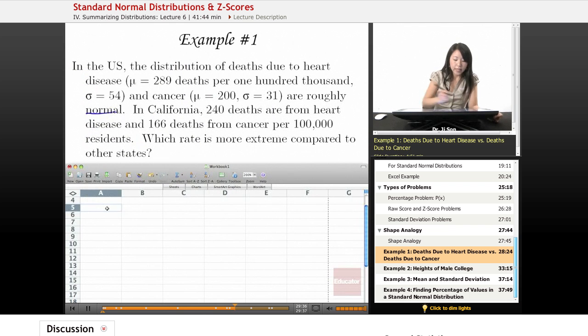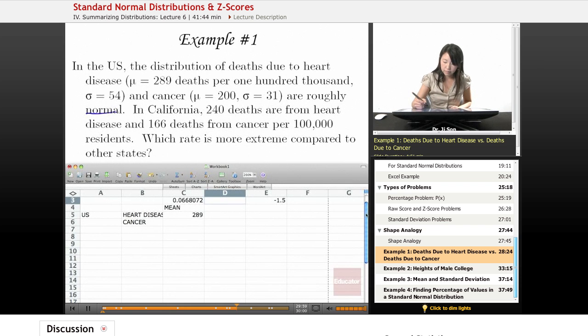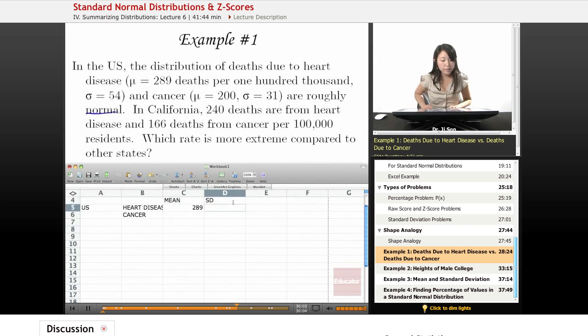Let's first start with the US. The US mean for heart disease, I'll use this row for heart disease and this row for cancer. So the US mean is 289, and the standard deviation is 54.